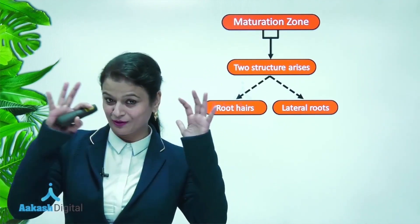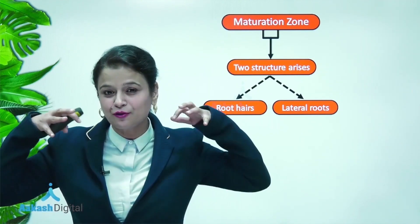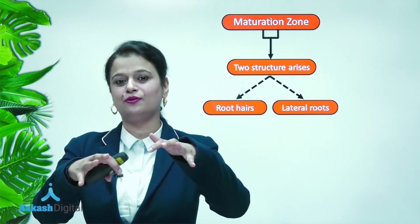Now how do these structures arise? What do you think - are these structures superficial, arising from the surface, or are these structures arising from the core interior of the root?